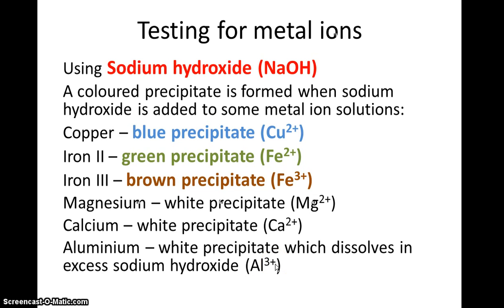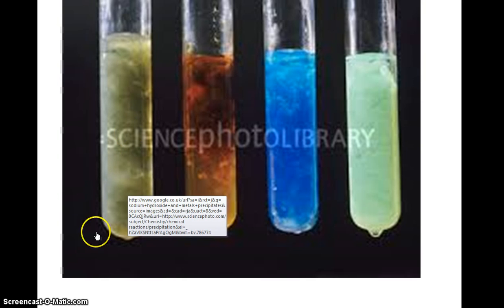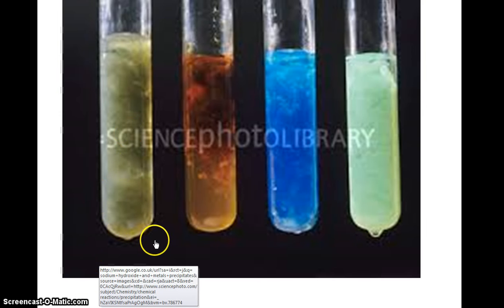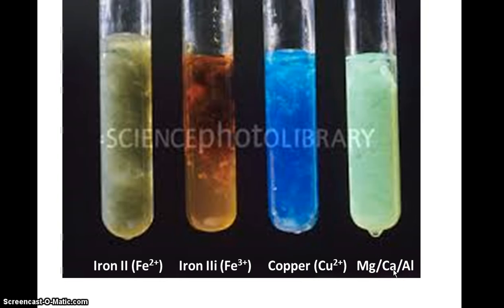Here are some examples of precipitates — remember, a precipitate is an insoluble solid floating around in a liquid. Pause for a moment and see if you can figure out which metals are present in these four test tubes. The answers are: green precipitate is iron(II), brown precipitate is iron(III), blue is copper, and the white precipitate could be magnesium, calcium, or aluminium.